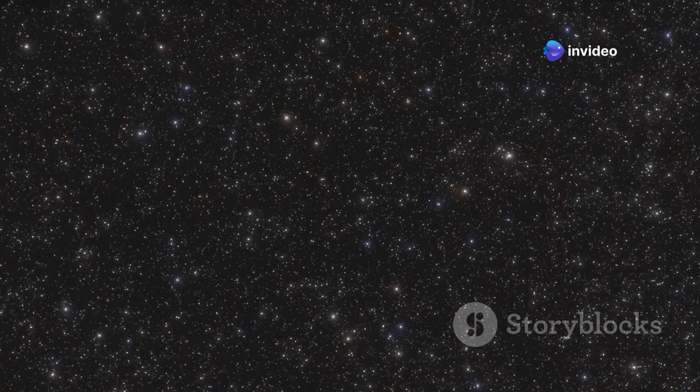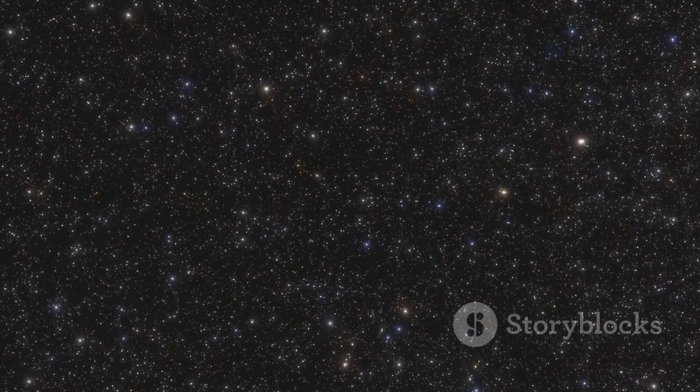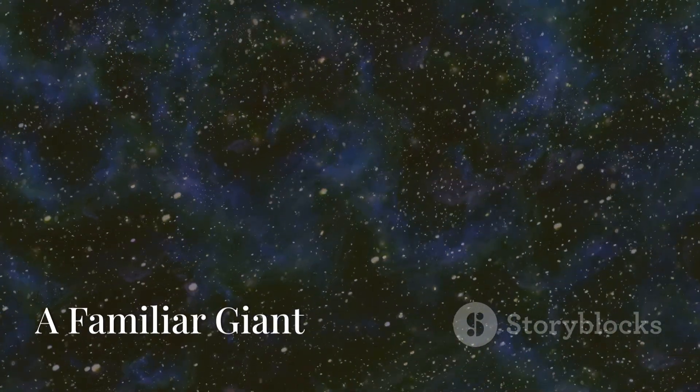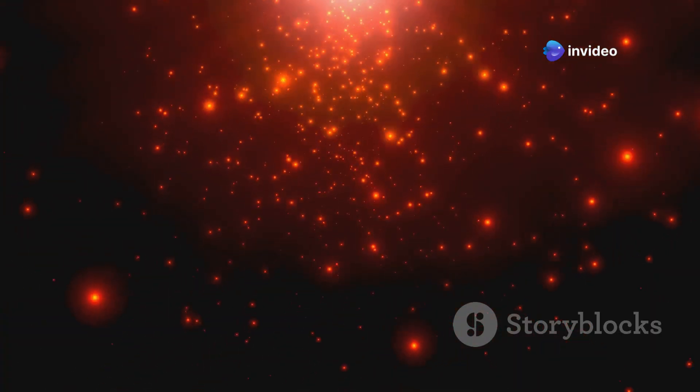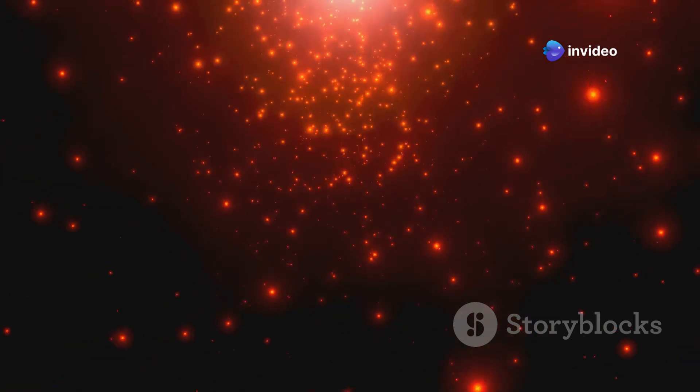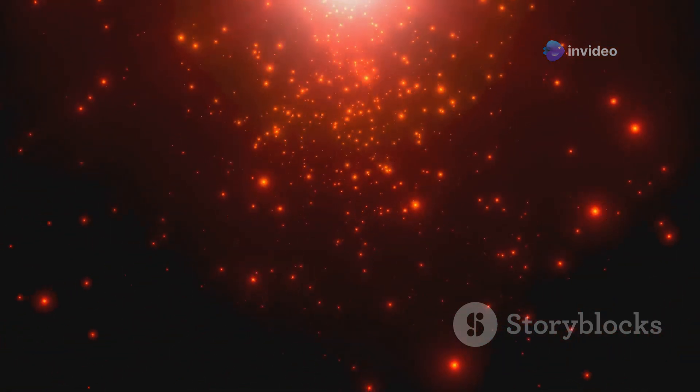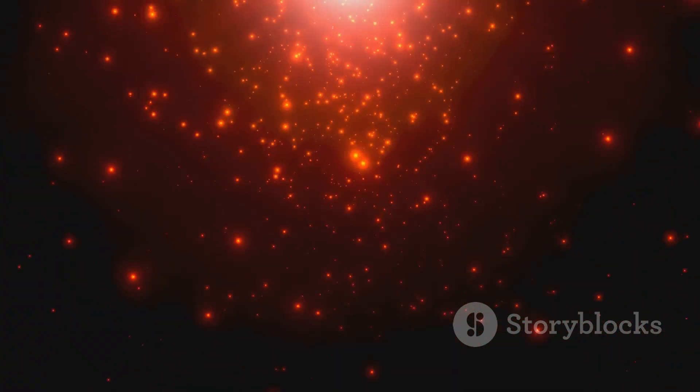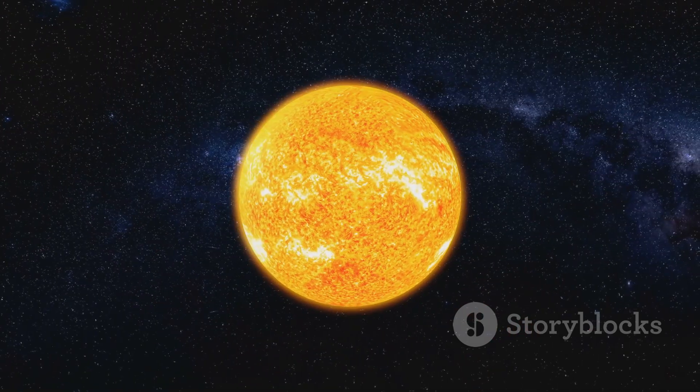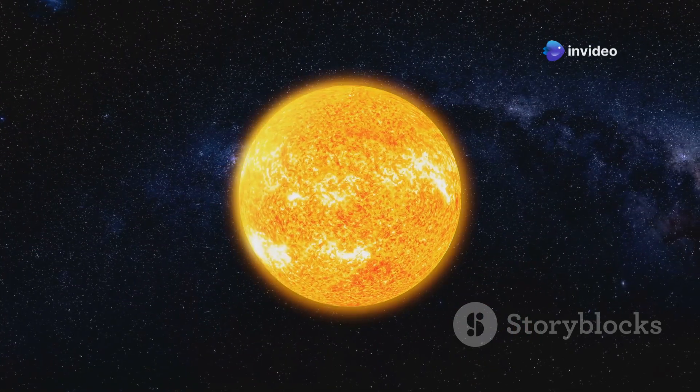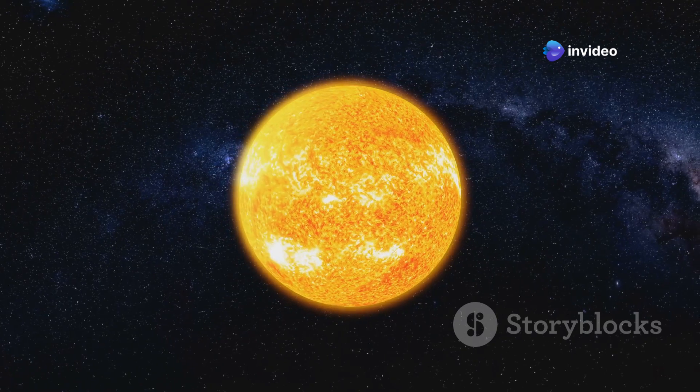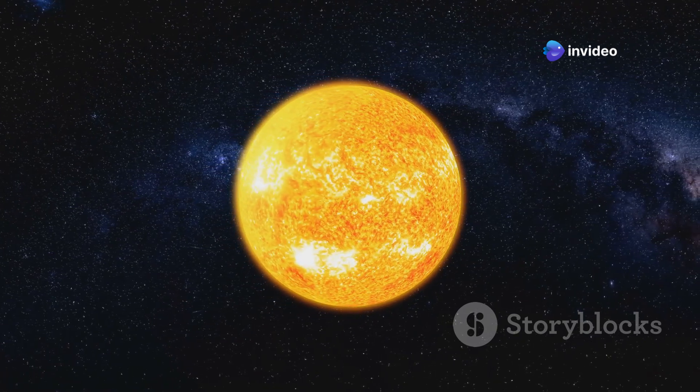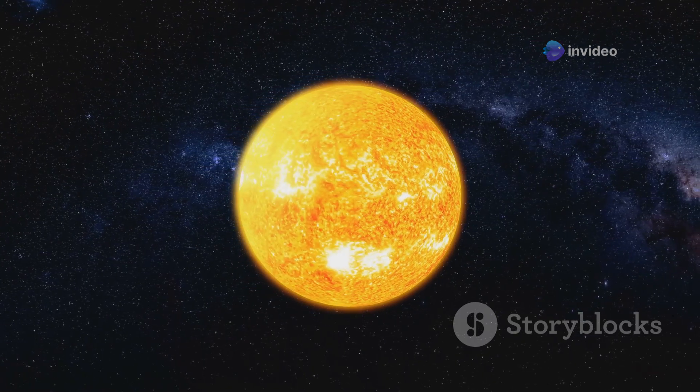Now let's meet some of these cosmic giants face to face. VY Canis Majoris is a red hypergiant in the constellation Canis Major. This colossal star is one of the largest known to humanity, and its sheer size is mind-boggling. It's about 1,400 times larger than our sun. To put that into perspective, if VY Canis Majoris were placed at the center of our solar system, it would extend beyond the orbit of Jupiter.